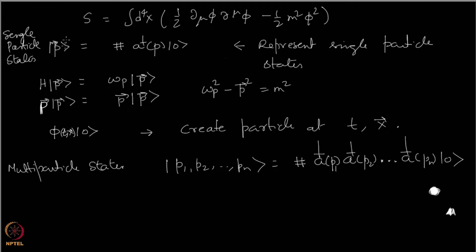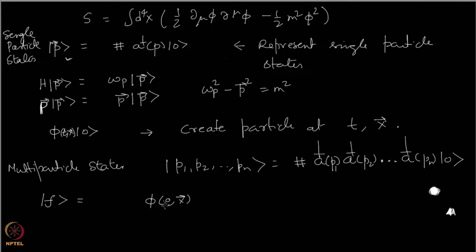These states of fixed momentum serve as a good basis for describing single particles. If you want to describe a particle which is localized, let us look at position first. Suppose I want to describe a single particle state. What I do is first create a particle — let us say at time t equal to 0. You could choose t non-zero, but let me write it anyway. So we are creating a particle at position x at time 0.